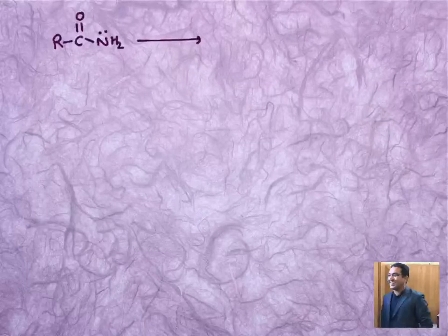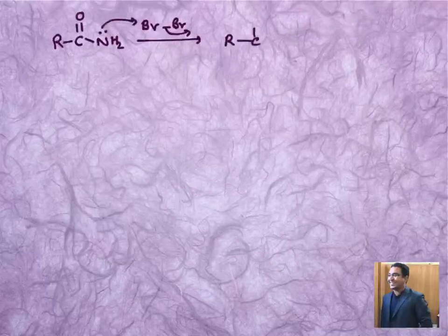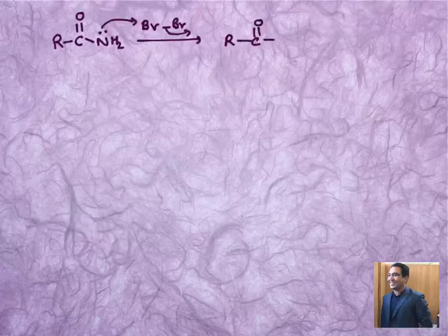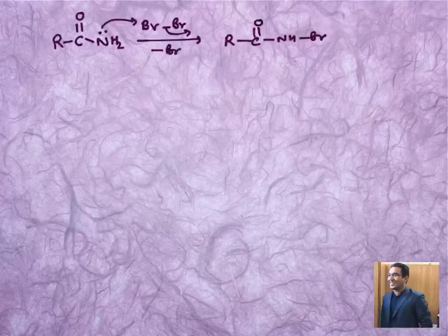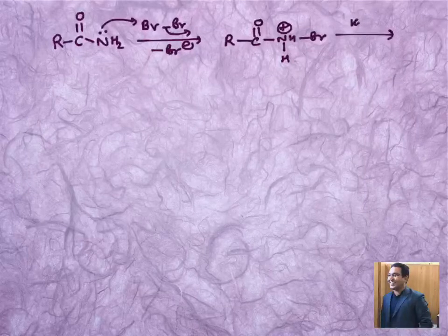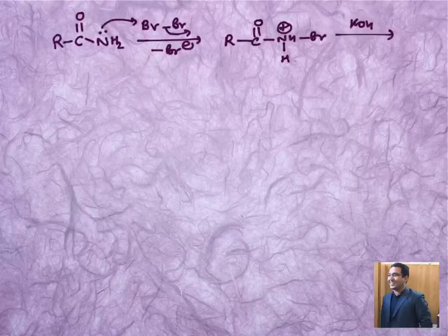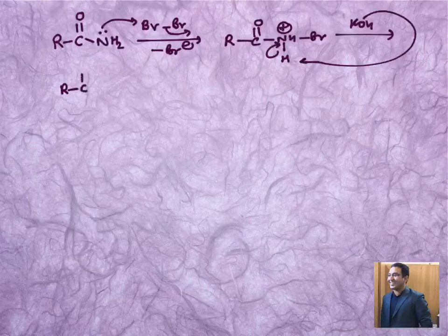We can refer this mechanism step. Let's say we are given R-C double bond O-NH2 and you have brought bromine. We can say that nitrogen lone pair will be interested here and it will form R-C double bond O and at this place we have NH-Br when Br minus comes out, and the extra H which is there can be taken off with the help of the base that is given as KOH.